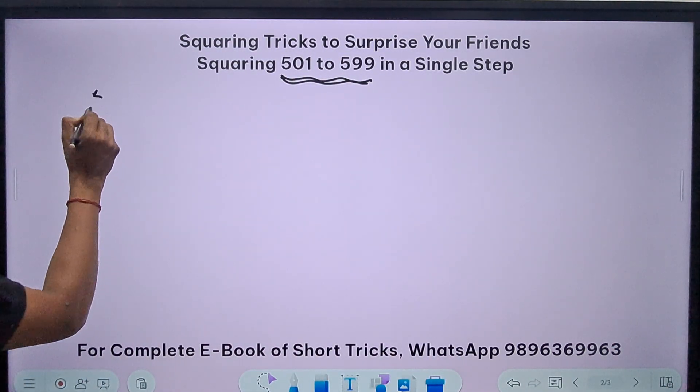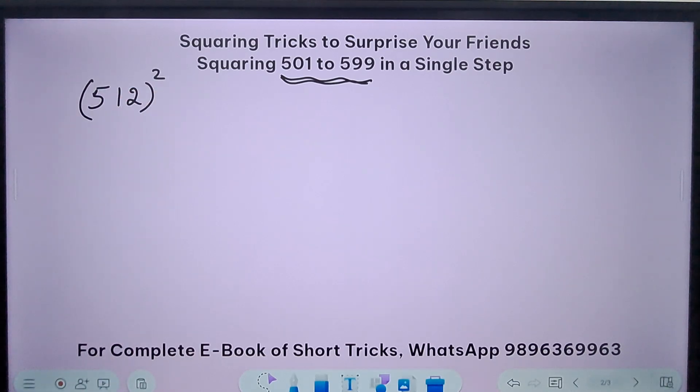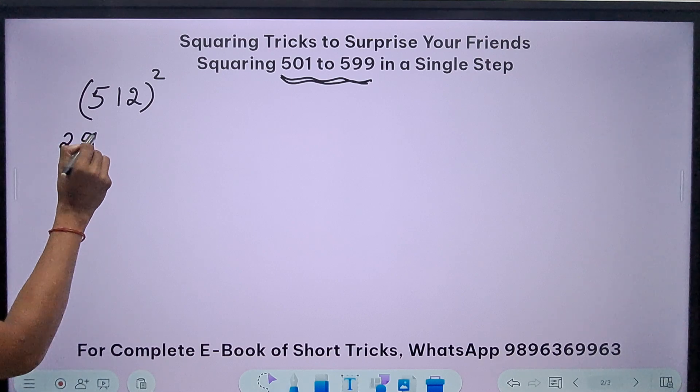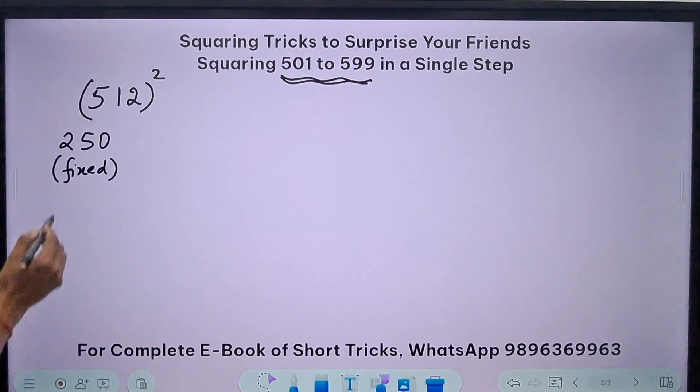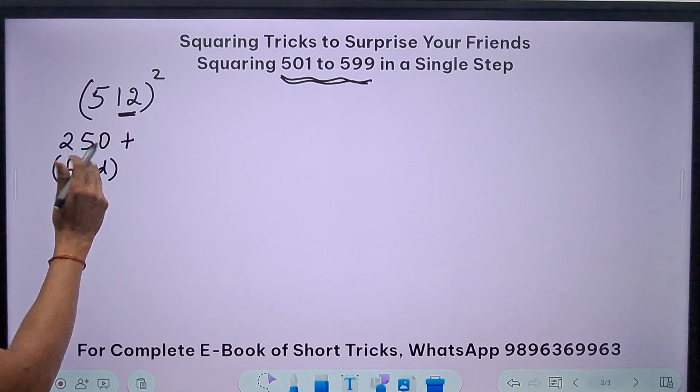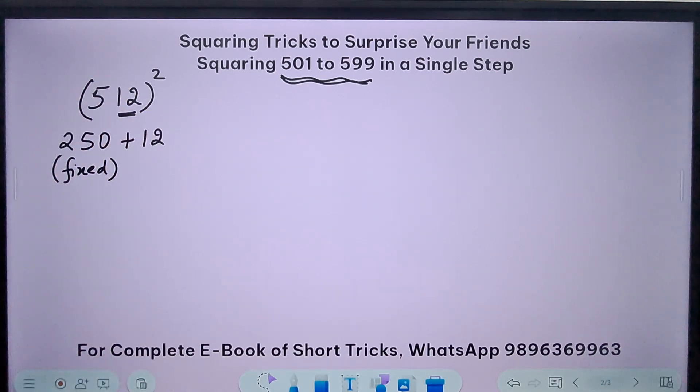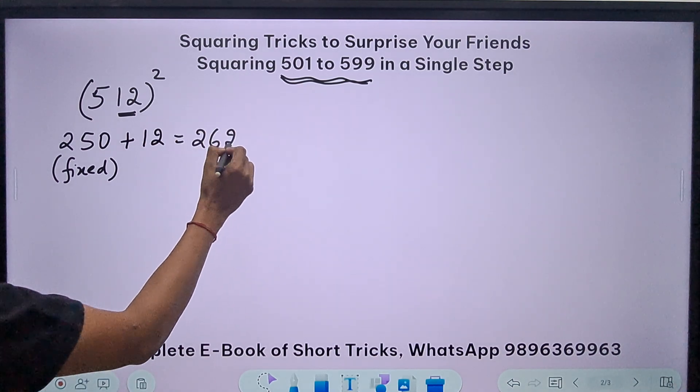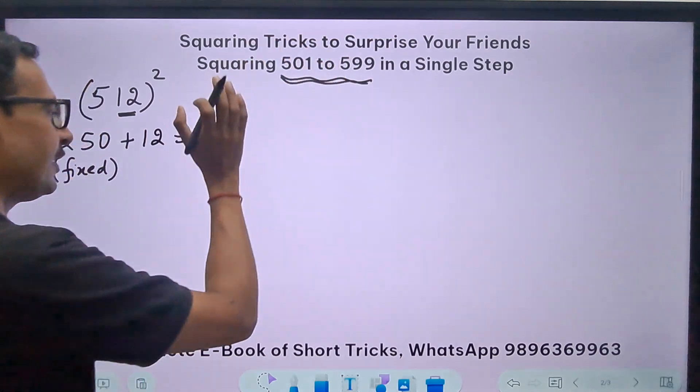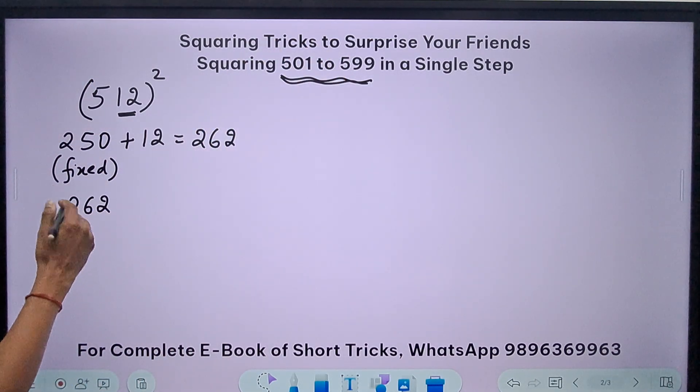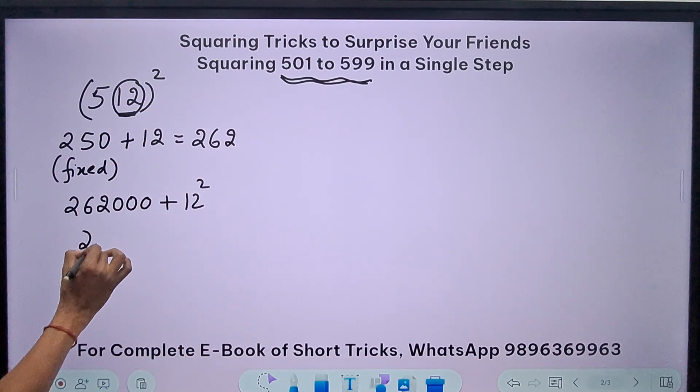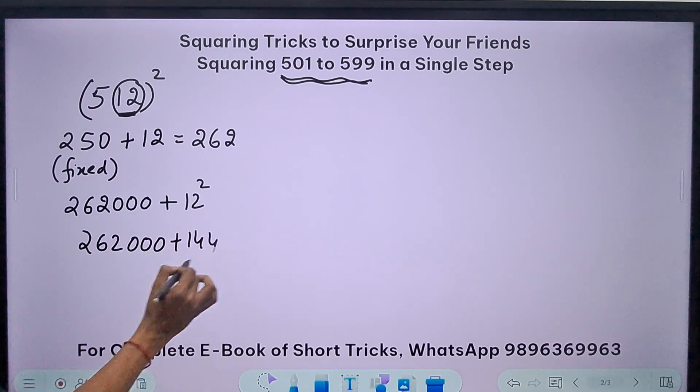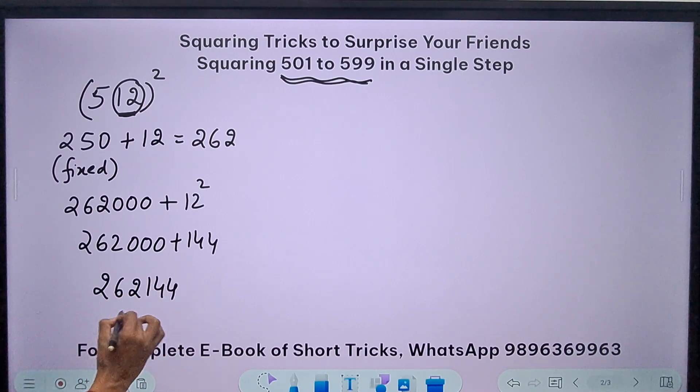Let's take a number like 512 and try to find the square. I have a fixed number, 250 now. This is the reference number which I have to use for finding the square of numbers between 500 and 600. So 250 is a fixed number plus the excess number. Above 500 I have 12 here, so let's add 12 to this. You'll get 262. Now, just like in the previous case I multiplied by 100, now I'm going to multiply 262 by 1000, and that gives me 262 triple 0. I have to add something to this: 12 square. 12 square is 144, so 262 triple 0 plus 144 will give me my answer: 262144. That is the square of 512.